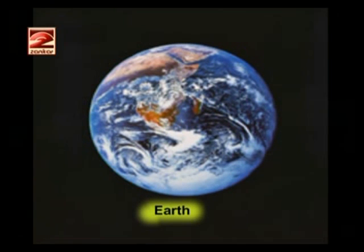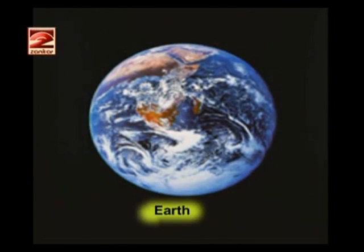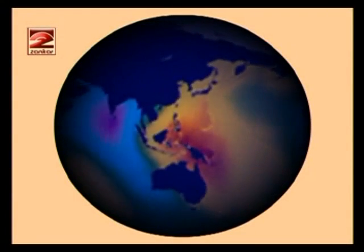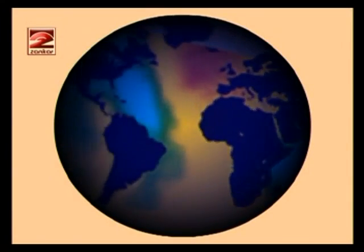The factors necessary for life — such as right temperature, water, air, atmosphere, and protection of the ozone layer — are found only on Earth, and therefore in our solar system only Earth has a living world. The axis around which Earth rotates is not perpendicular to its orbit but slightly inclined, and because of this Earth has seasons like summer and winter.